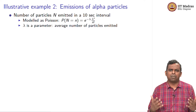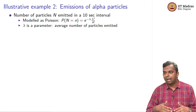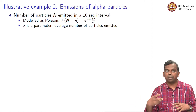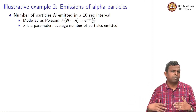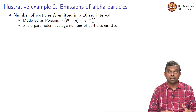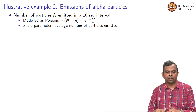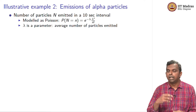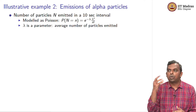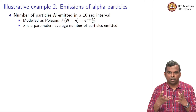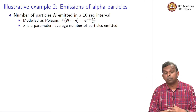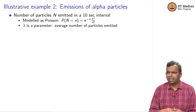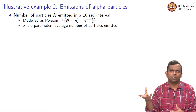Let us look at a few more examples where this notion of IID samples from a distribution with an unknown parameter, and us trying to find the parameter, shows up. It shows up quite a bit in scientific experiments, particularly in engineering applications. Here is a scientific experiment that is very common: if you have a radioactive substance, it puts out some particles — that is the meaning of radioactivity.